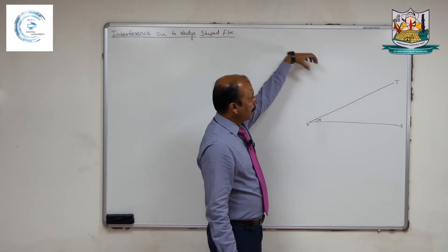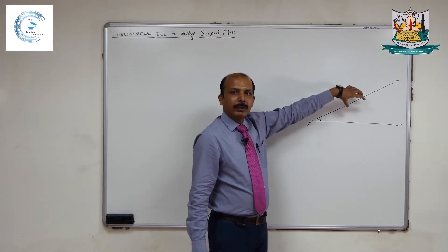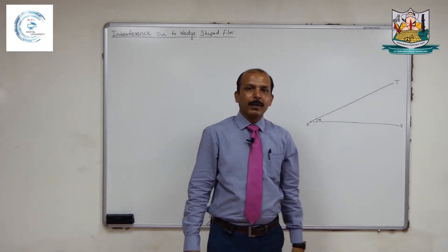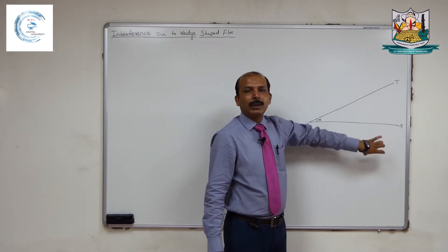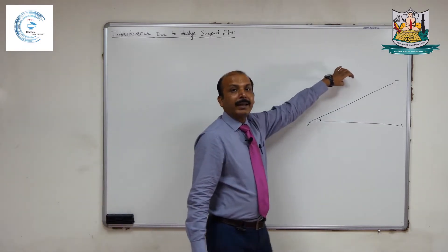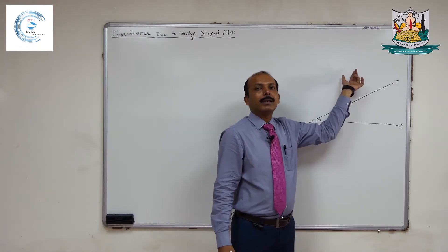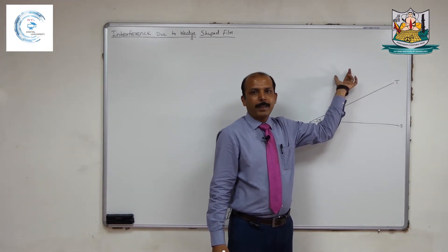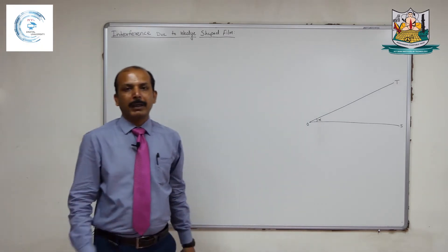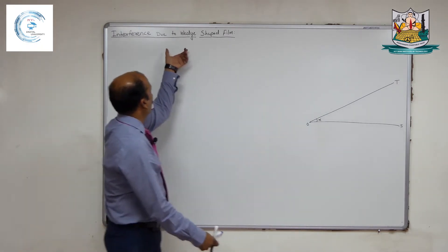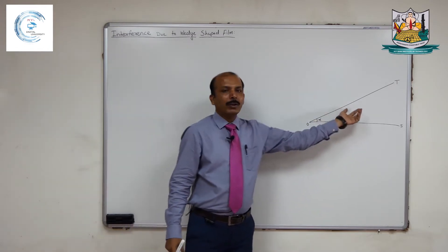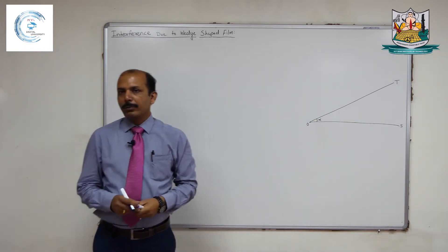When monochromatic light is incident from the upper side on this wedge-shaped film, both reflected light and transmitted light produce an interference pattern. The interference pattern can be seen in reflected as well as transmitted light, but in the reflected side the reflected rays have approximately the same intensity or amplitude, so a sharp and clear interference pattern is produced. We will discuss only the reflected case and find the path difference, then the conditions for bright and dark bands.